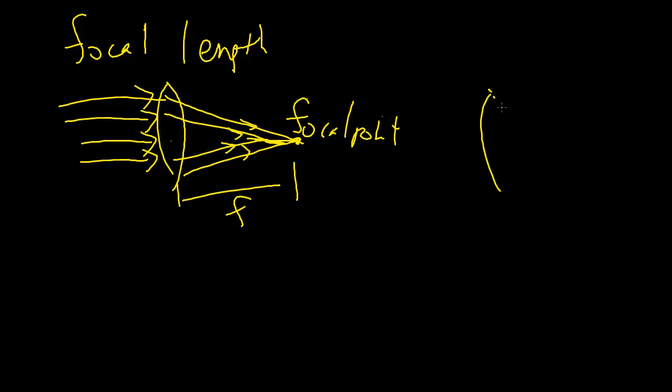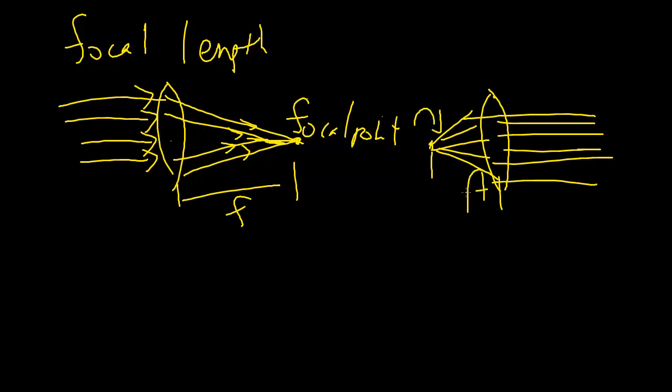Similarly, you can also have an object start at a particular distance to form these parallel light beams coming out. That's also the focal point, and it is, for thin lenses, perfectly symmetric.